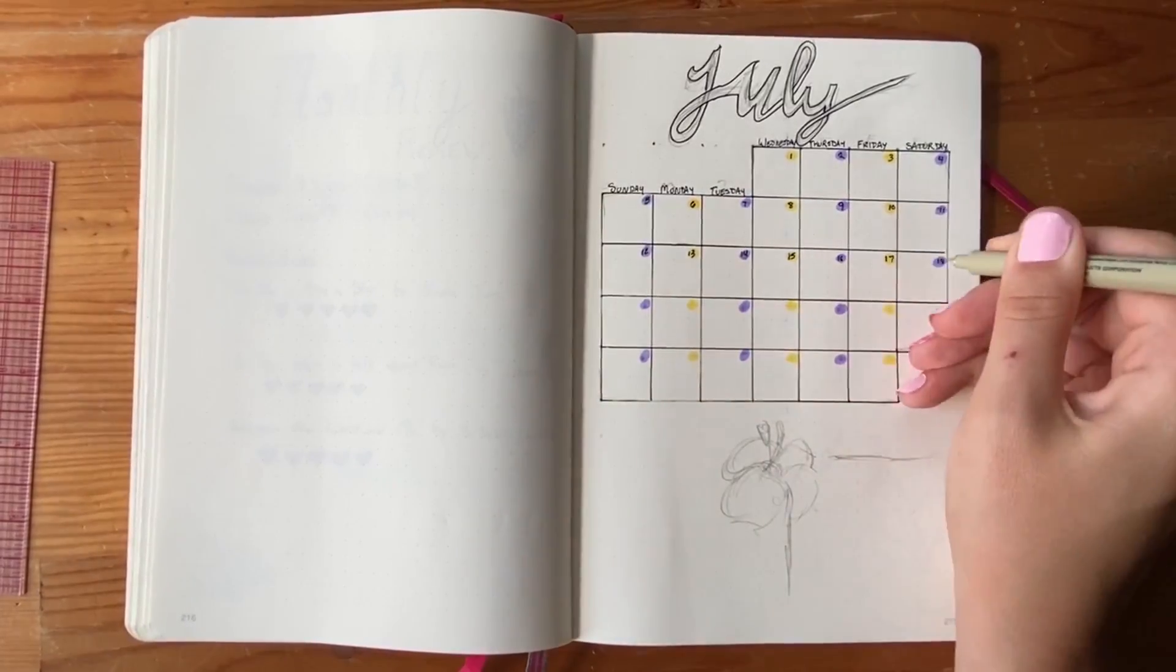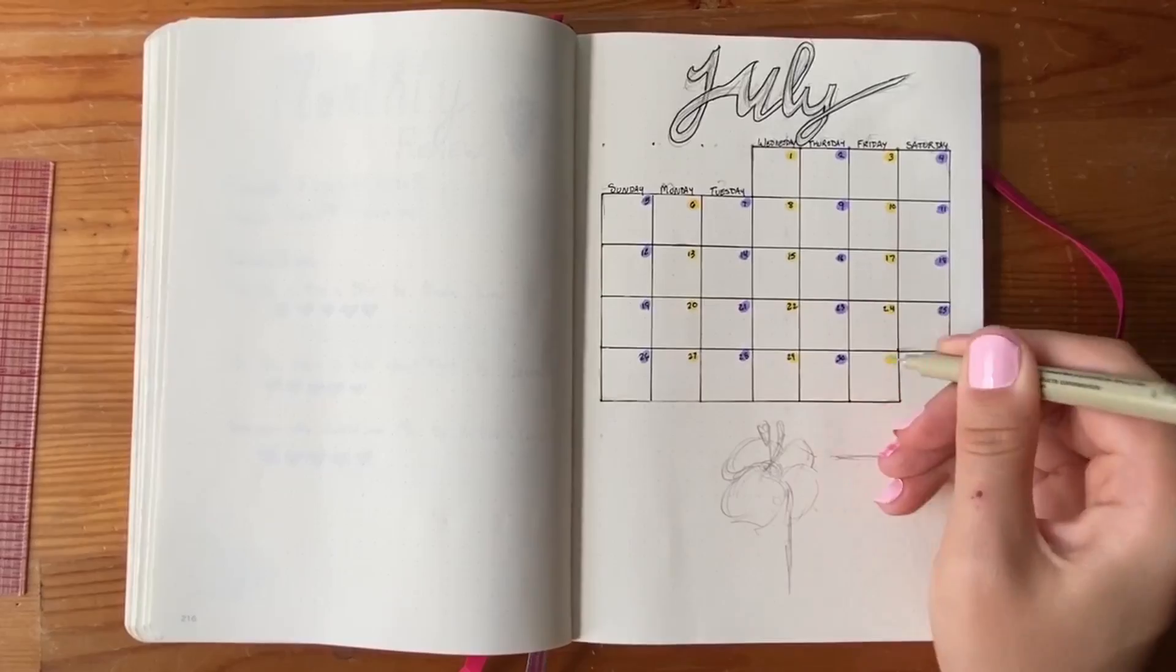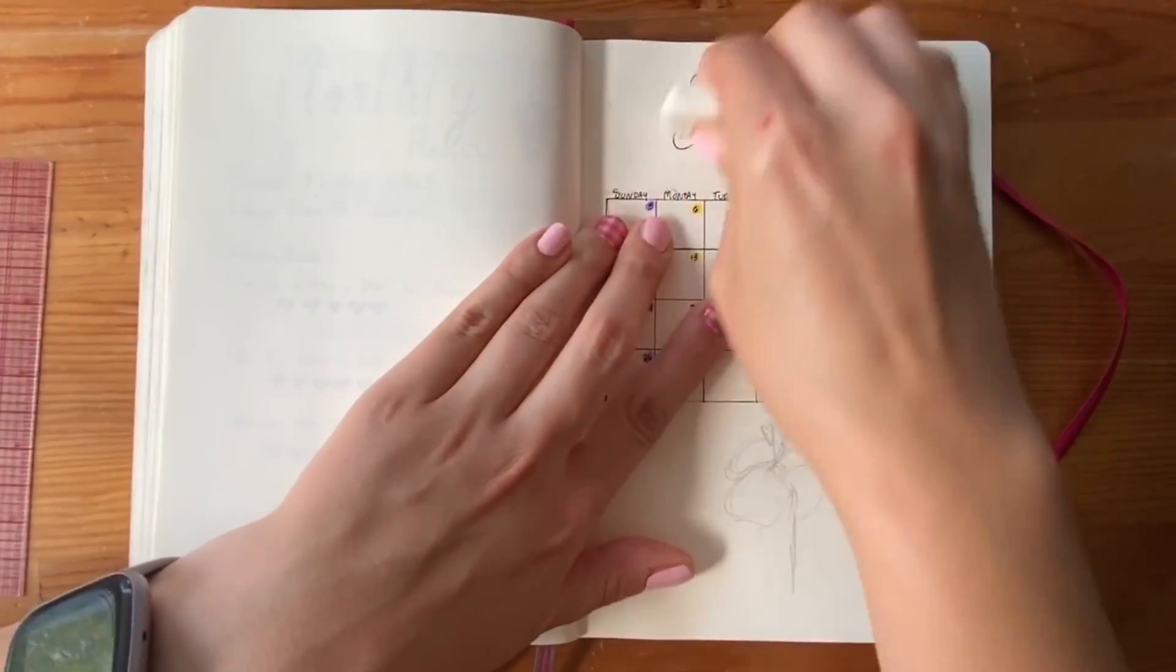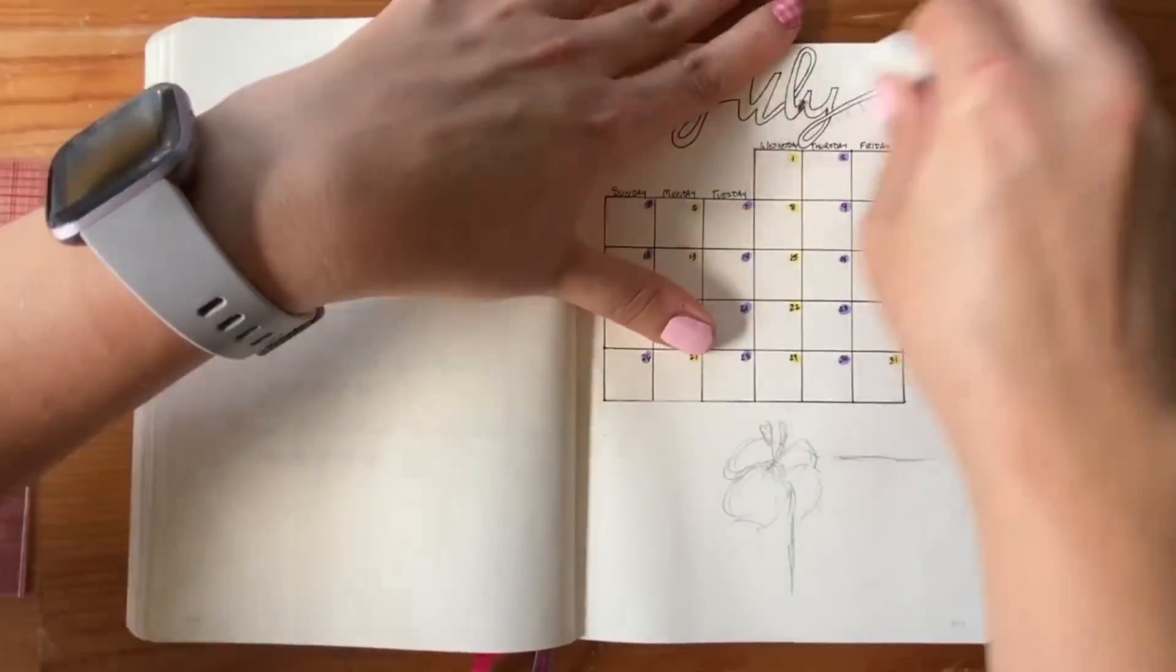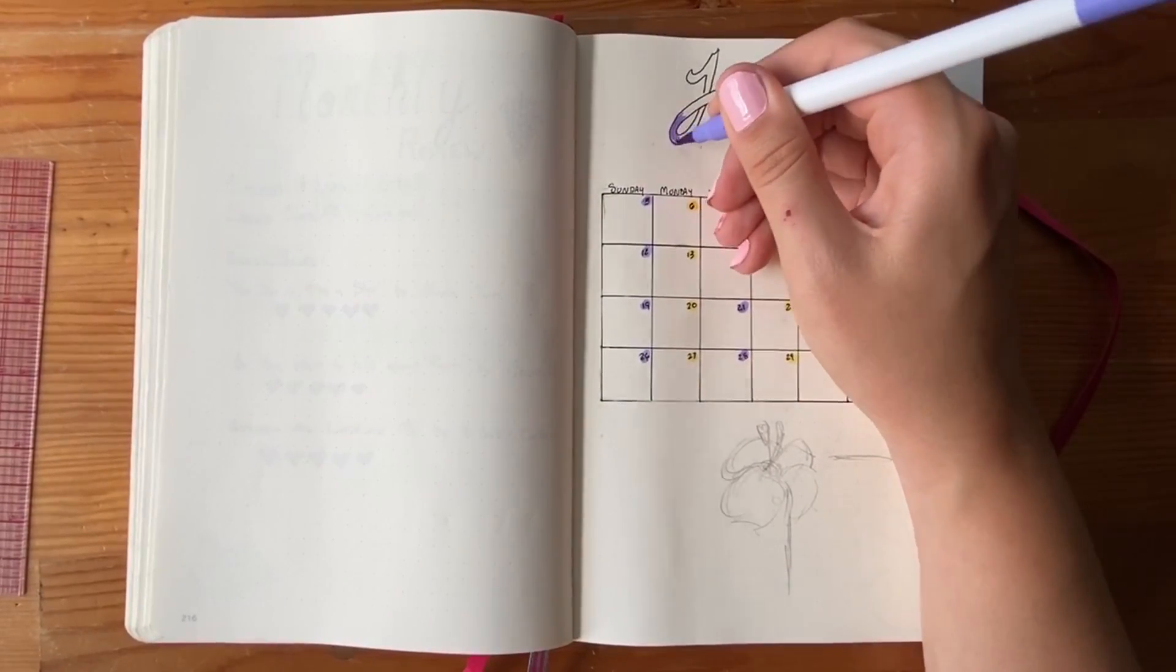If you've watched my bullet journaling videos before you know that I am notorious for getting the numbers completely wrong or the days of the week completely wrong whenever I set this up. But I think I actually got it okay this time, so hooray!